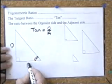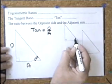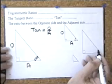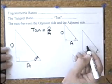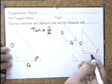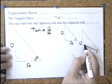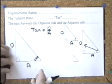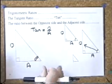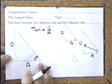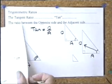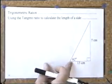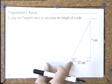Opposite is next to the angle I'm working with. The hypotenuse — we won't label it because we're not using it this time. So the tangent is the connection between the opposite and the adjacent.